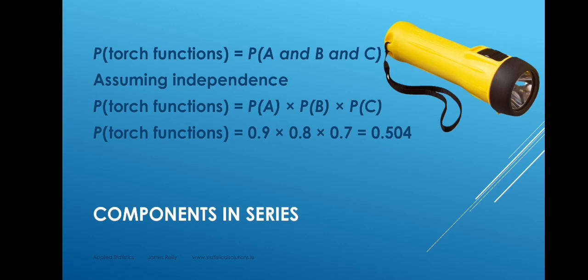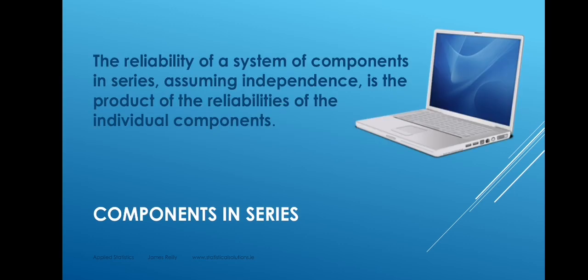You might notice that the system reliability 0.504 is lower than the lowest of the three component reliabilities, and that will always happen with components in series. The reliability of the system is worse than the worst component. So if there's one very bad component in a system, it will cause the system to fail very often. In general, the reliability of a system of components in series, assuming independence, is the product of the reliability of the individual components. We simply multiply them together.